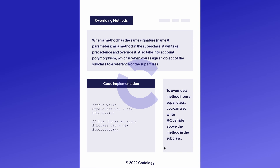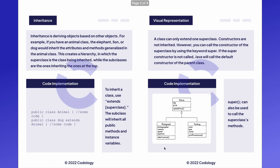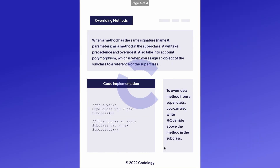Also in inheritance, there's something called polymorphism, which is when you assign an object of a subclass to a reference of the superclass. For example, using our previous UML diagram with picture, we would write: picture myPicture equals new photograph. This is when we store a photograph object to a reference of picture, which is its superclass. You cannot do the opposite — it will throw an error — so you want the reference to be the superclass and the object to be the subclass.